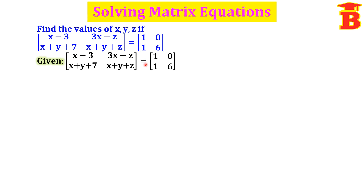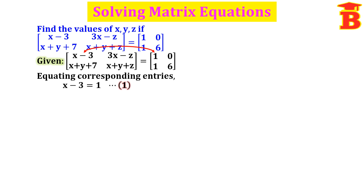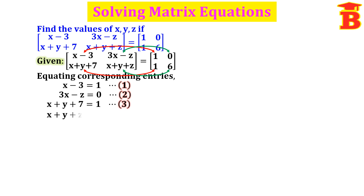Given that these two matrices are equal, therefore we can equate both sides. Equating the corresponding entries: x-3 equal to 1, 3x minus z equal to 0, x plus y plus 7 equal to 1, and x plus y plus z equal to 6.